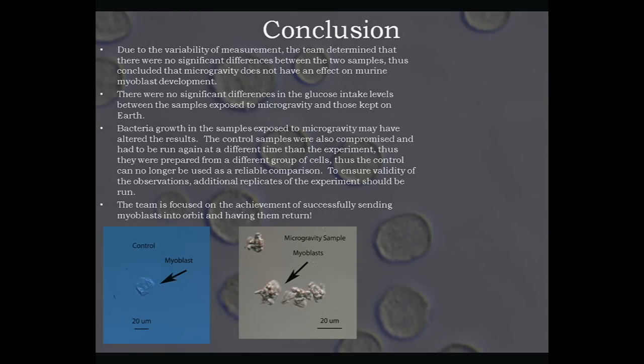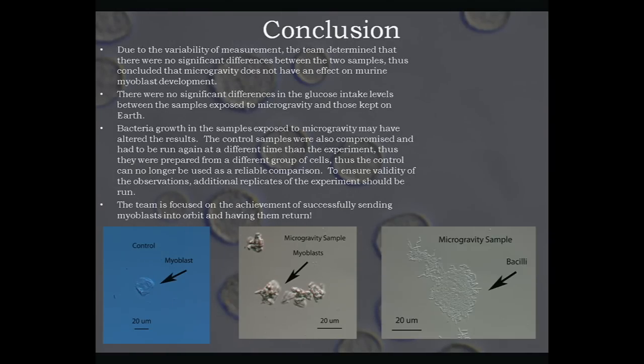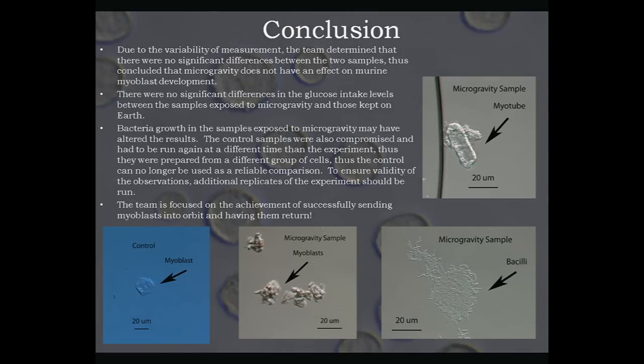The bottom right picture is of a myoblast from our control samples. This picture is of a group of myoblasts from our space samples. This picture is of a bacillus, a type of bacteria that grew in our microgravity sample. And this is a myotube that formed in our space sample.